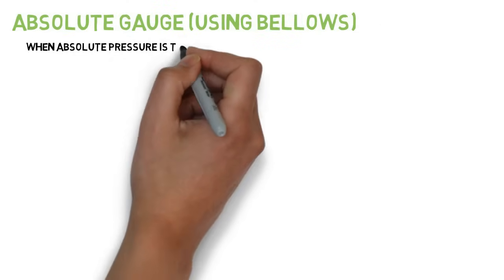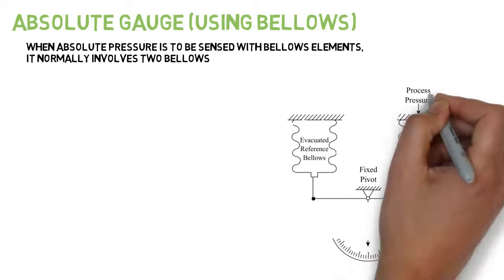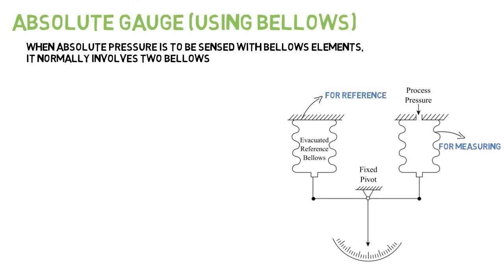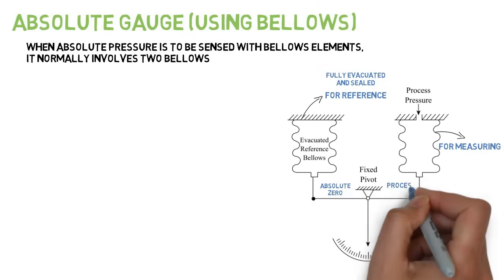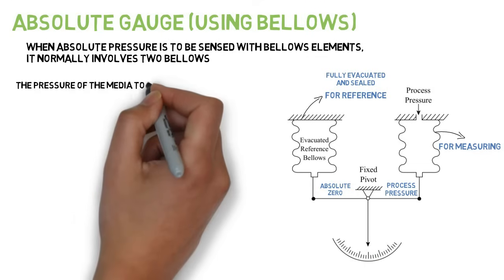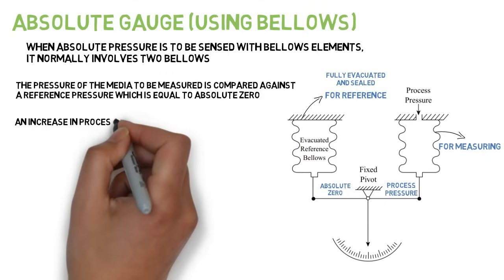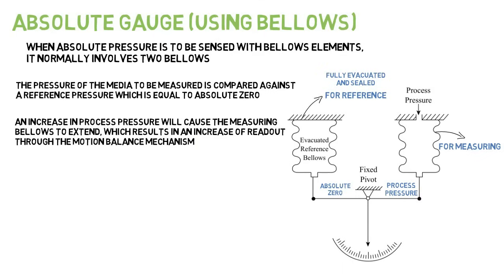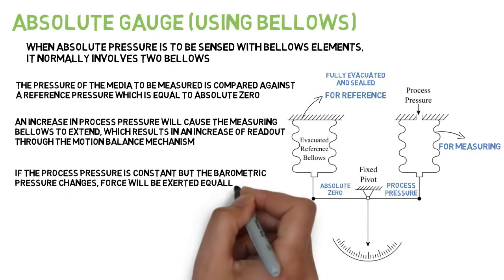When absolute pressure is to be sensed with bellows elements, it normally involves two bellows — one for measuring and one for reference. The reference bellows element is fully evacuated and sealed, while the sensing element is connected to the process. The pressure of the media to be measured is compared against a reference pressure equal to absolute zero. An increase in process pressure will cause the measuring bellows to extend, resulting in an increase of readout through the motion balance mechanism. If the process pressure is constant but the barometric pressure changes, force will be exerted equally on the outside of both bellows, causing no change in the readout.